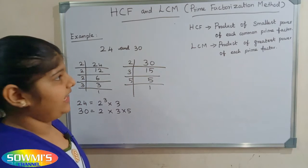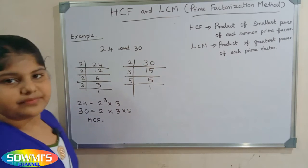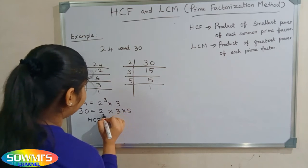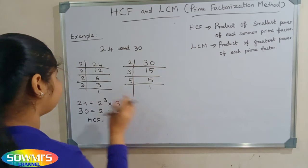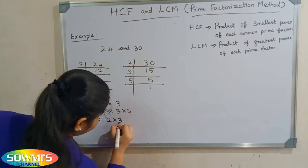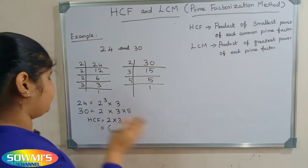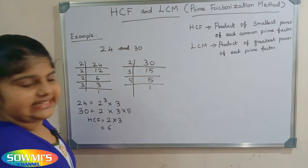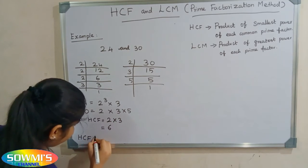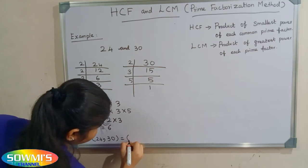First we will find HCF. The smallest power of the common prime factors is 2 and 3. So now we have to multiply 2 and 3. 2 threes are 6. Therefore, the HCF of 24 and 30 is 6.